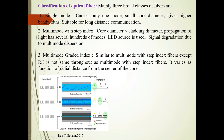The third type is multi-mode graded index, shown in this diagram. It is similar to multi-mode step index fibre, except that the refractive index is not the same throughout. It varies as a function of radial distance from the centre of the core.